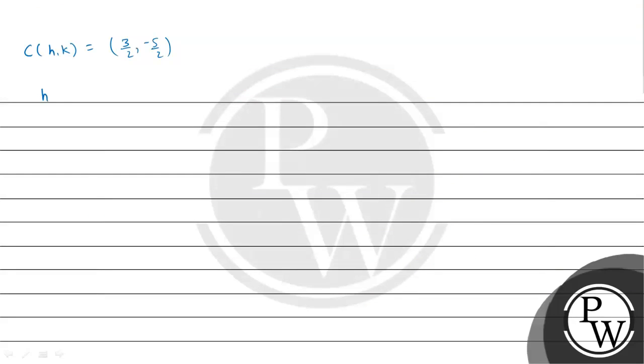Using the midpoint formula, h = (1 + x)/2. Since h = 3/2, we have 3/2 = (1 + x)/2. Solving this gives x = 2.